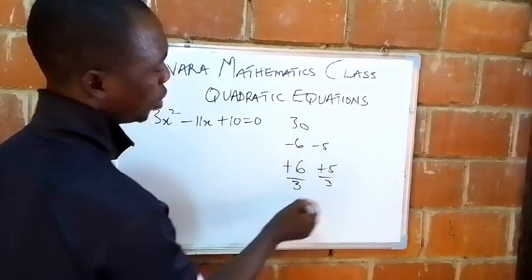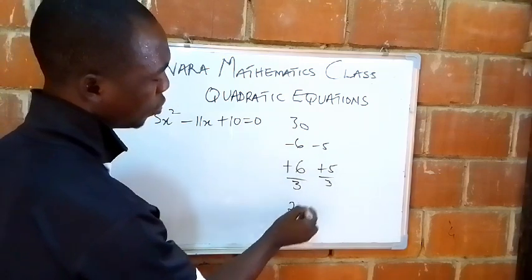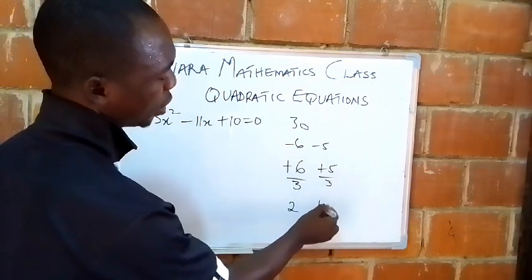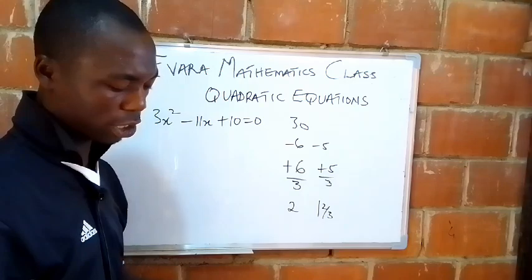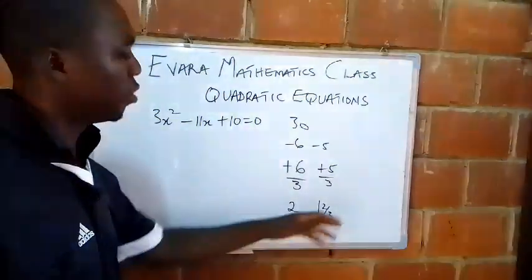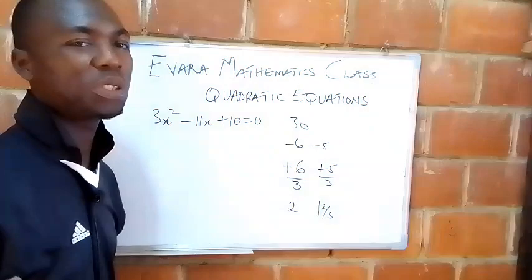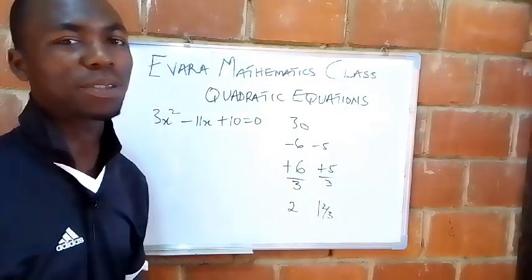You have 3, 3. So 6 divided by 3, 2. 5 over 3, that's 5/3. So with this, these are the roots of the quadratic equation. Thank you. Don't forget to subscribe.